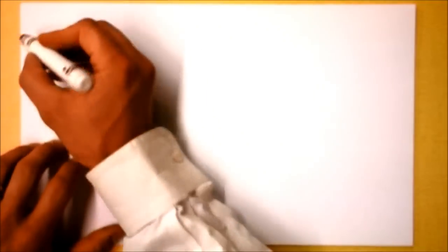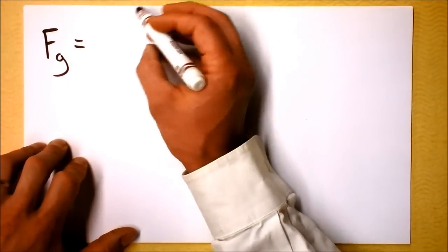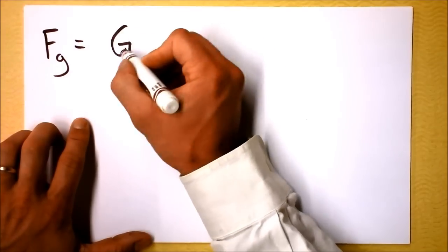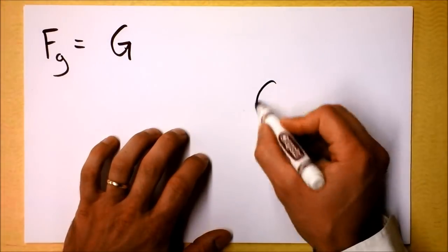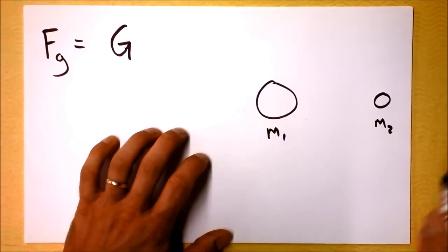Enough of these frou-frou topics. I'd like to move on to something a little bit more weighty. Check this out. The force of gravity depends on this constant of the universe, called capital G, and if I've got a mass here, m1, and another mass over here, m2,